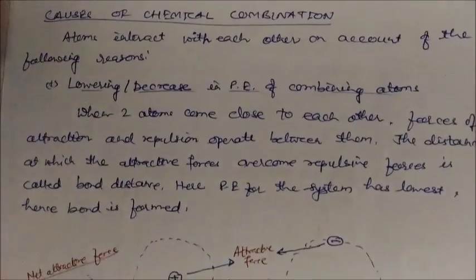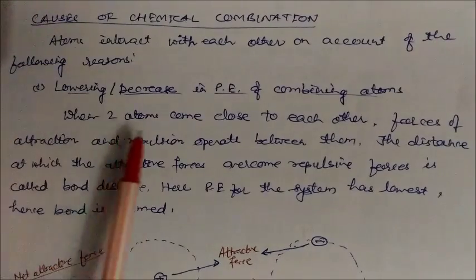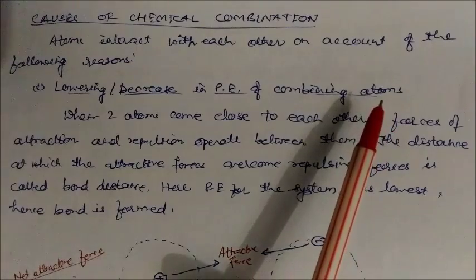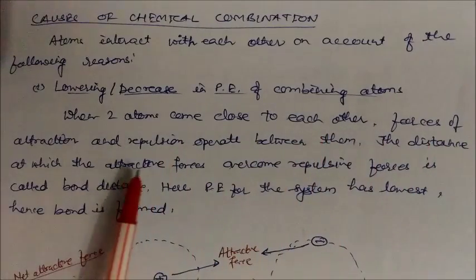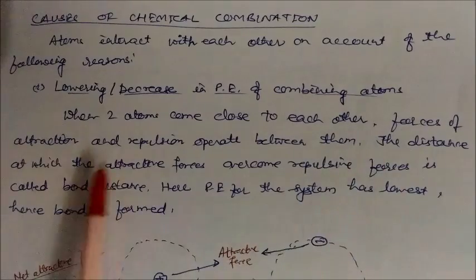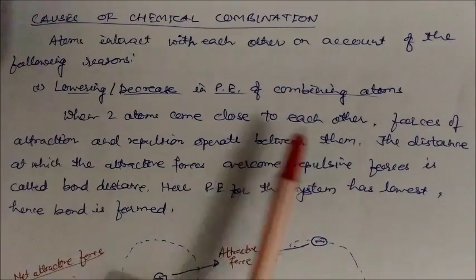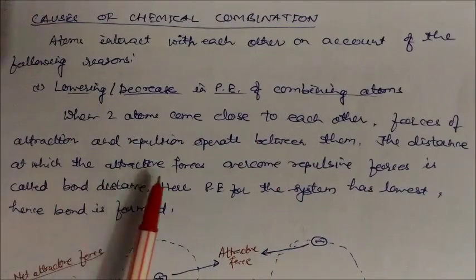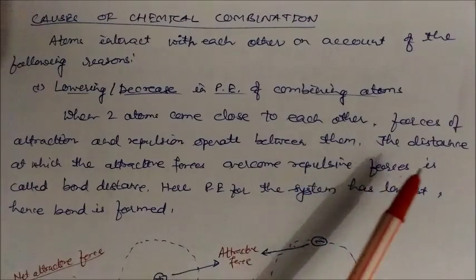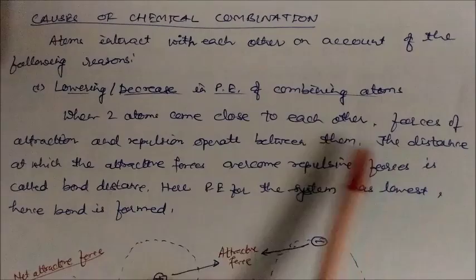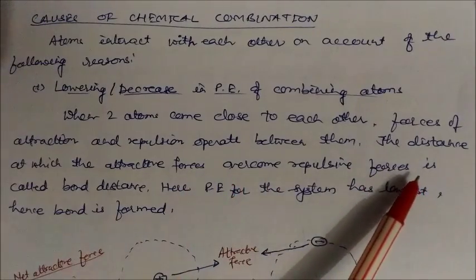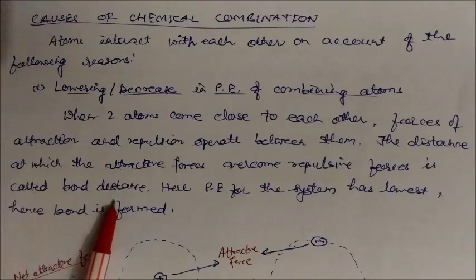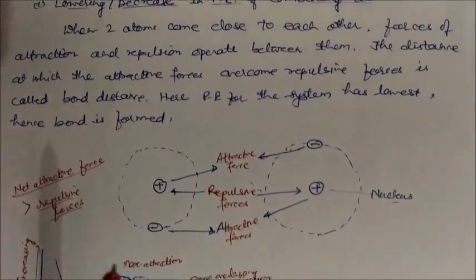Now let's look at the causes of chemical combination. The first cause is the lowering of potential energy of the combining atoms. When two atoms come close to each other, forces of attraction and repulsion operate between them. The distance at which the attractive forces overcome the repulsive forces is called the bond distance, and at this point the potential energy of the system is at its lowest, and a bond is formed.